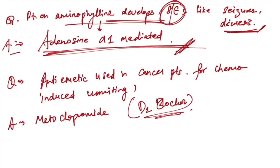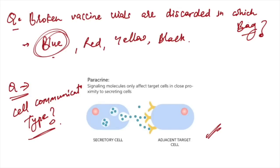Antiemetic used in cancer patients for chemo-induced vomiting: metoclopramide is the drug of choice because they are D2 blockers. Broken vaccine vials are discarded in blue bags. Red is human anatomical waste, yellow is dirty gauze pieces, and black is other waste materials.